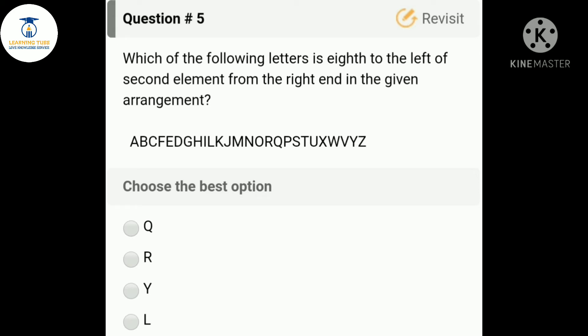The fifth question: which of the following letters is eight to the left of second element from the right end in the given arrangement? The second element from the right end is Y, and the letter which is eight to the left of second element is Q. So the correct answer is option A, Q.